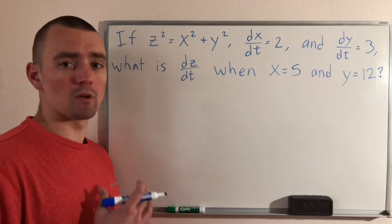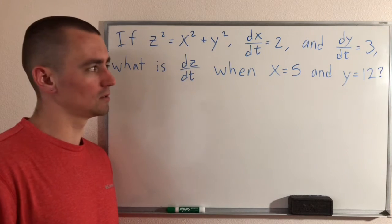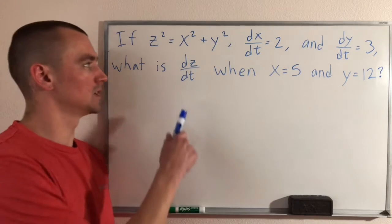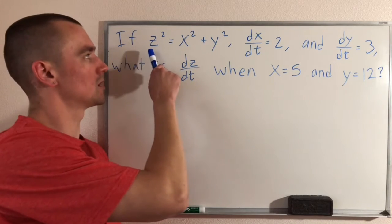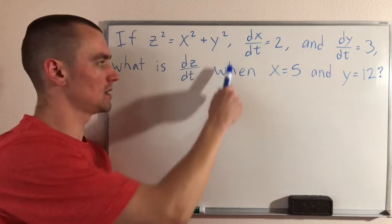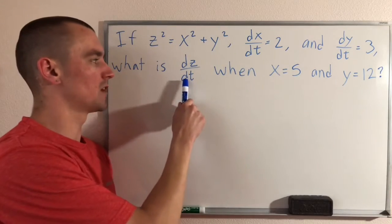This is an example of applying implicit differentiation. The reason we know that it's implicit differentiation is because we're given this equation of x, y, and z, and we're told that we need to find dz/dt.